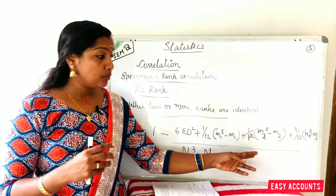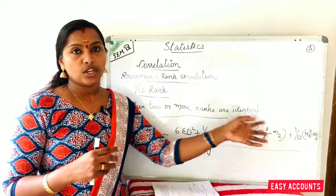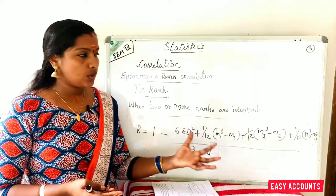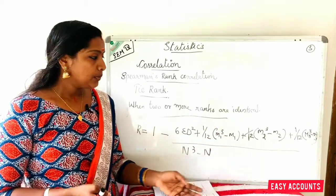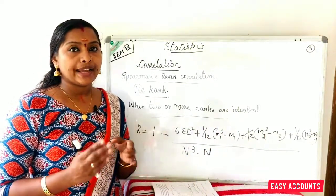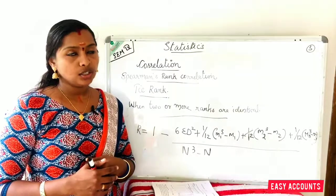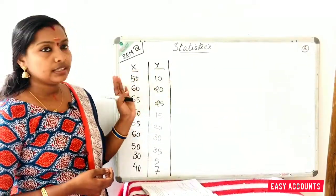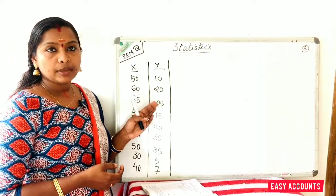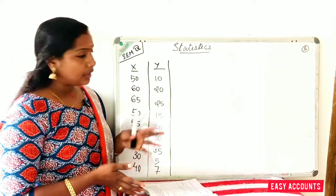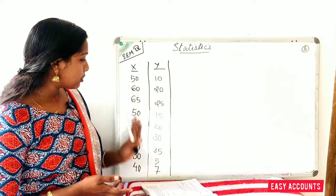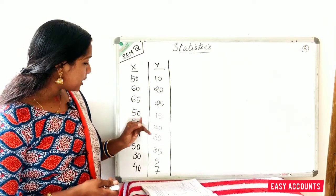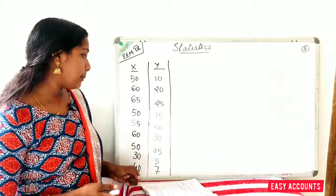Now we will do a problem together, taking time to work through the tie rank. You can ask a question about the tie rank. The variables for x and y: x has values 50, 60, 60, 50, 50, 50.